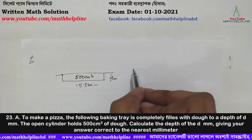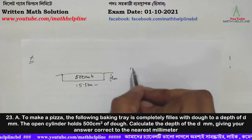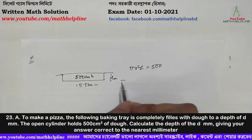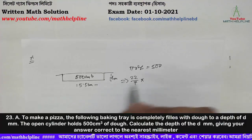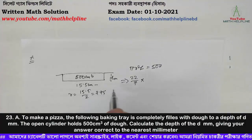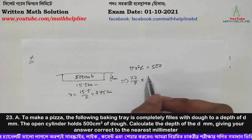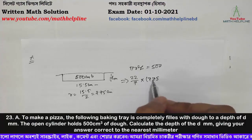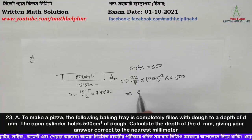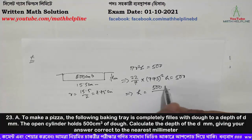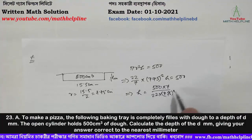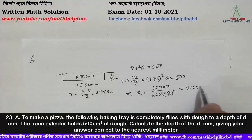Since the volume is 500 cm³, we can write: π × r² × d = 500. With r = 15.5 cm, so π × (15.5)² × d = 500. Solving for d gives us the depth to the nearest mm.